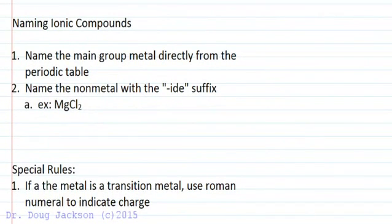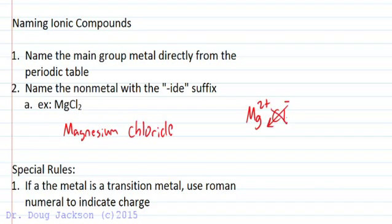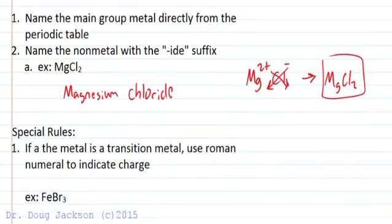So with nomenclature of ionic compounds, we have a few simple rules that we can learn to get the name correct every time. So we're going to name the main group metal directly from the periodic table. So Mg, we've learned magnesium. Name it directly from the table and the nonmetal is going to get an -ide suffix. So magnesium chloride. No prefixes on either element name are necessary because we get the numbers from crossing the charges to balance and charge balance. So we've learned how to do that already. No prefixes needed.